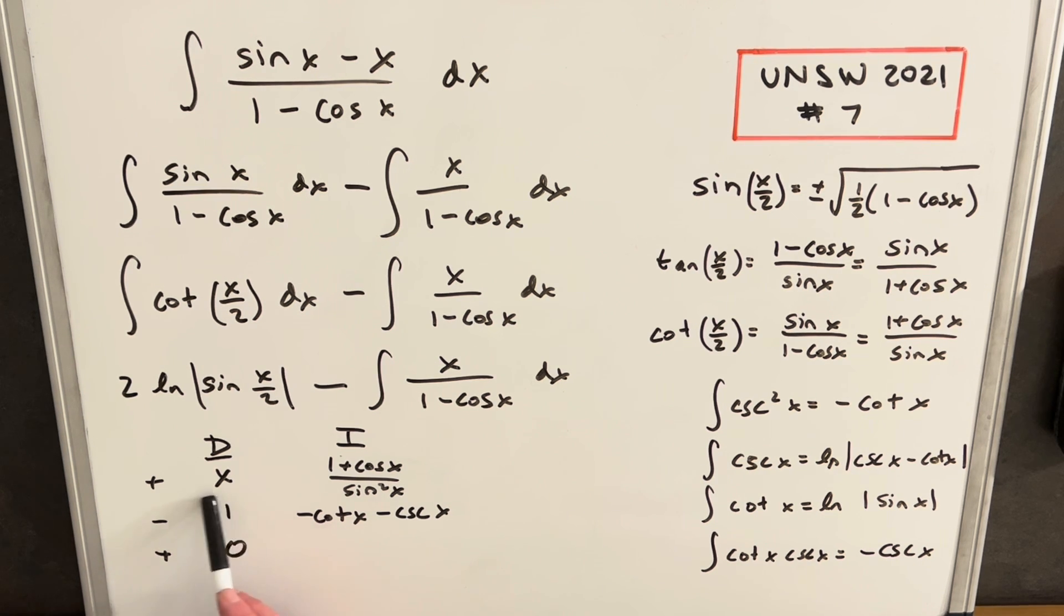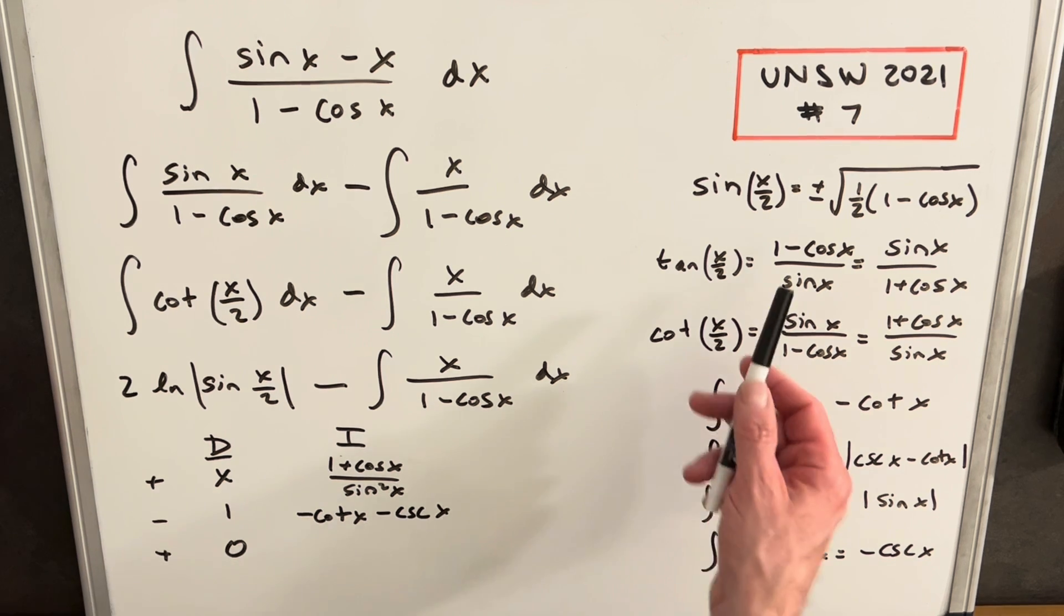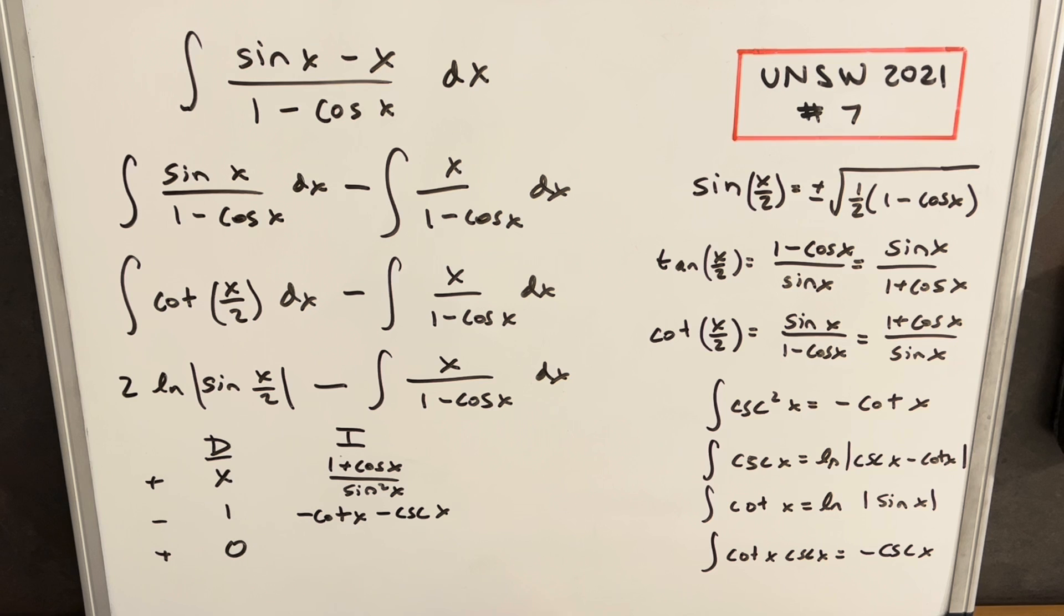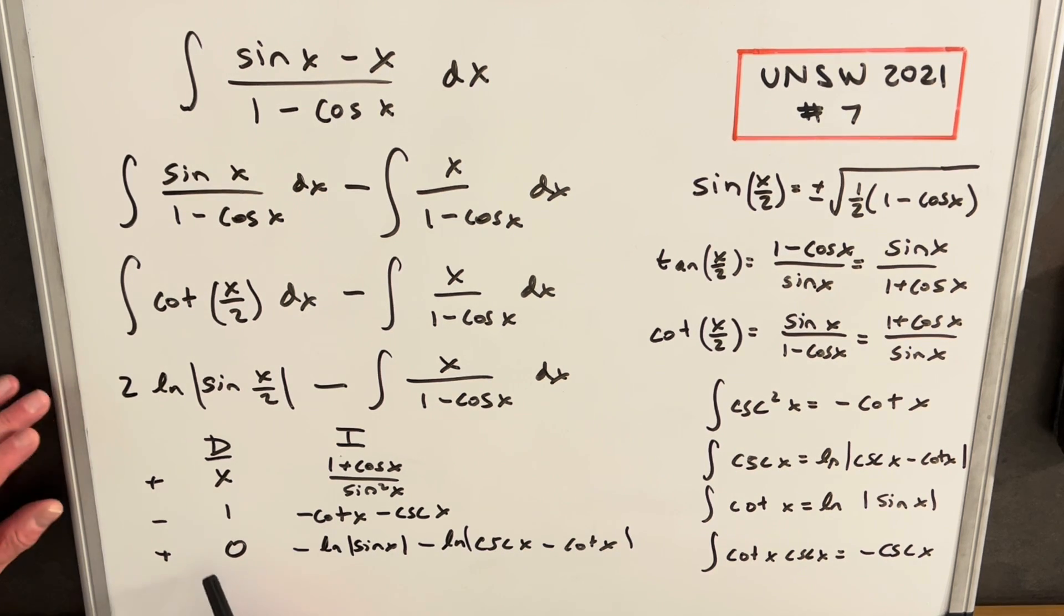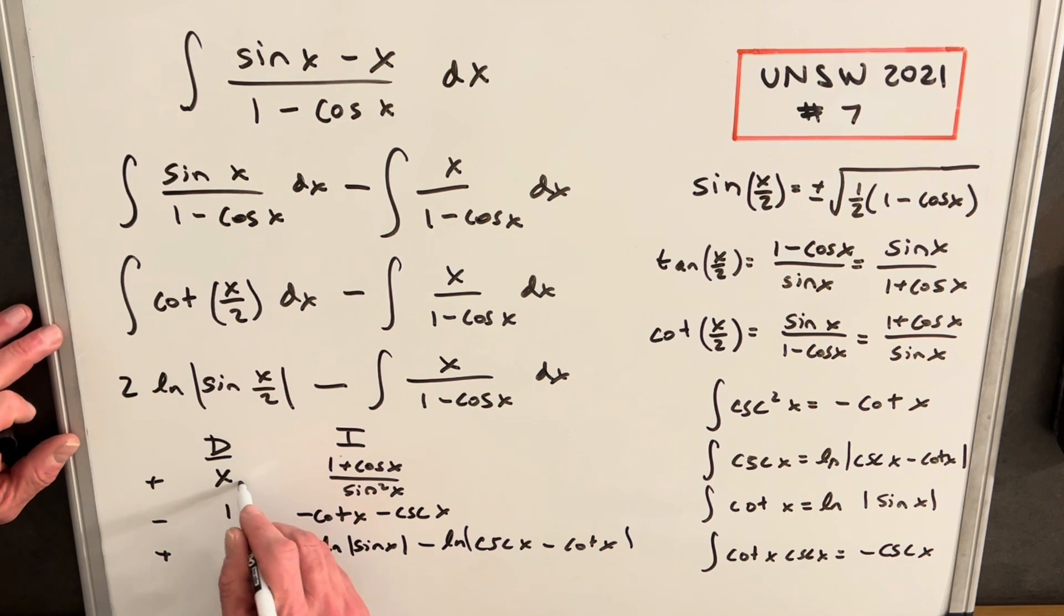From here we have to integrate one more time because we have this row here which is going to be an integral. You can see why I wrote down all these formulas, because you have to use them over and over again. We're going to have minus ln sine x, minus the integral of cosecant x, which is natural log cosecant x minus cotangent x. Our last row, because we have the 0, this integral is going to be 0, so we don't have to worry about it. We just need our solution on the diagonals.